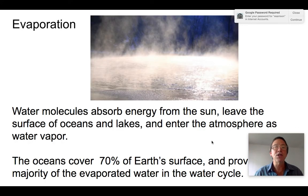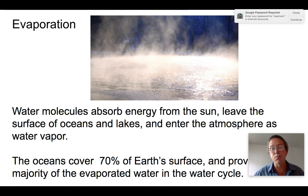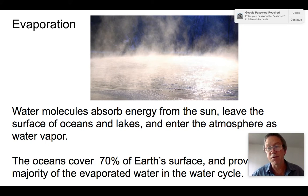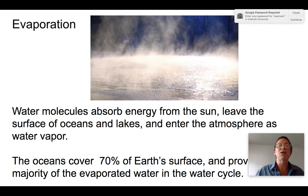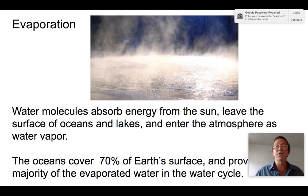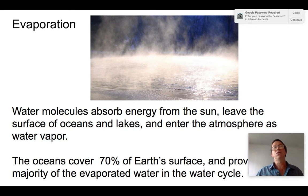Evaporation happens when solar energy causes surface molecules of a body of water — mostly the ocean, but also lakes, rivers, and wet surfaces — to jiggle and energize, pushing them up into the air. Since oceans cover over 70% of the Earth's surface, the vast majority — about 70% — of the water in the water cycle starts off as oceanic evaporation.